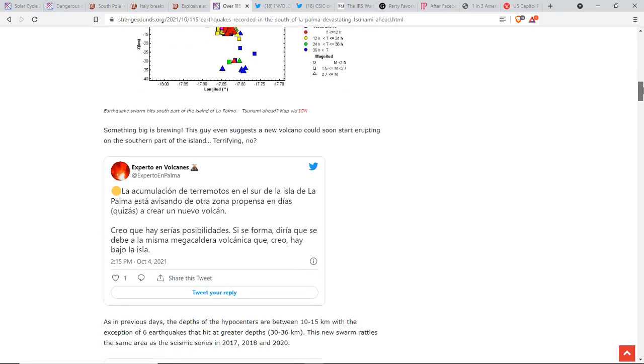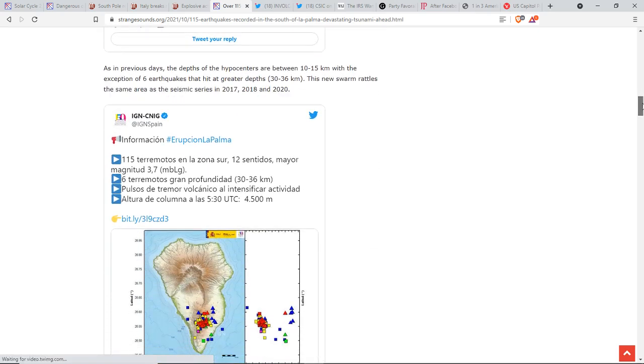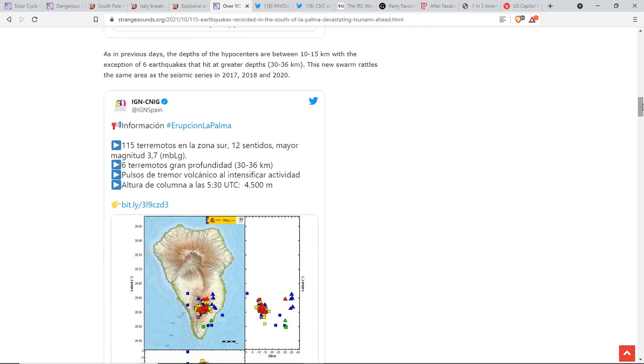And here you see this tweet. This guy even suggests a new volcano could soon start erupting on the southern part of the island. Now, that doesn't sound like a good scenario when that is the area that they worry about collapsing. Oh, yeah. I mean, that's not a good scenario at all.